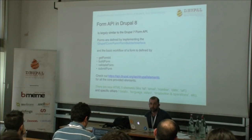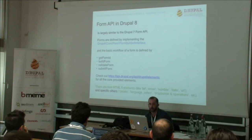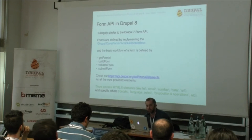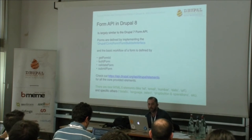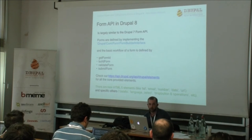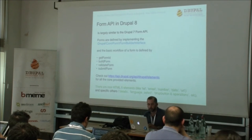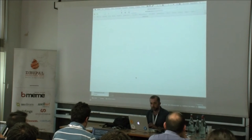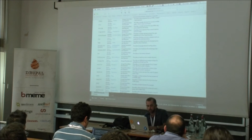The forms that underpin Drupal 8 define elements for creating forms. These elements are basically render arrays for forms. In this new version, new HTML5-specific elements have been added — like telephone, email, number, date, and URL — which have validation logic bundled inside them provided by Drupal core. Other specific elements like details, language, and select are additions compared to Drupal 7. Check the documentation page that shows all possible form elements.